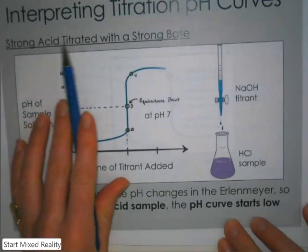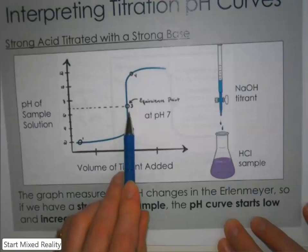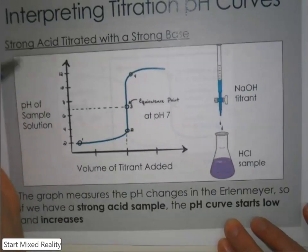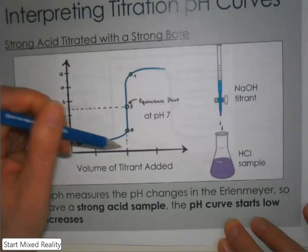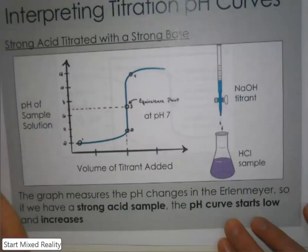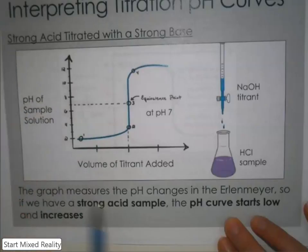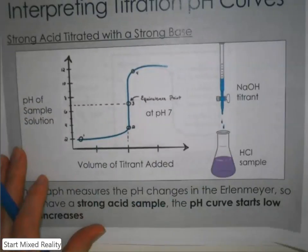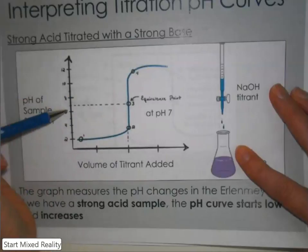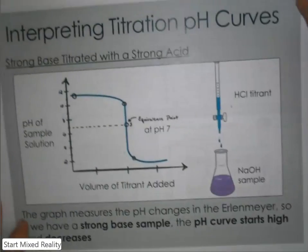For a strong acid titrated with a strong base, the shape of the curve always starts low, has that vertical component at some point, and then flattens out again. You aren't expected to have exact values marked for volume, and even for pH I'm not expecting exact values. If you just have this general shape sketched out for a strong acid and strong base, that'll be fine. Just make sure the midpoint lines up with whatever you've marked as pH 7.